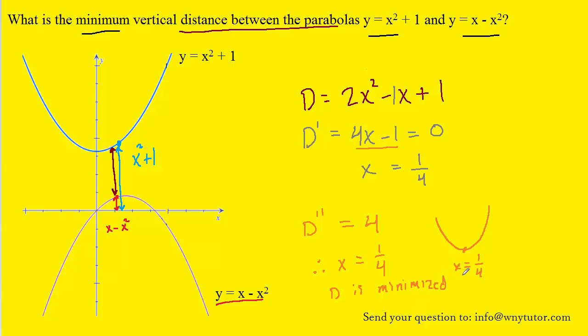Now of course the question did not want the particular x value. It actually wanted the distance itself. But that's going to be straightforward because we have the distance equation right at the top here. All we need to do is plug our value of x equals 1 fourth into each x of our distance equation. So let's do that next.